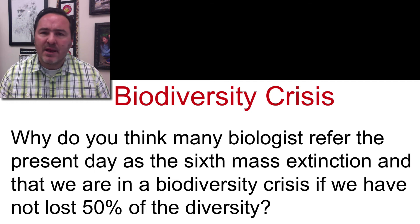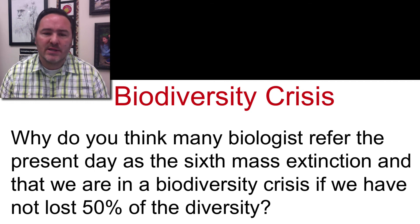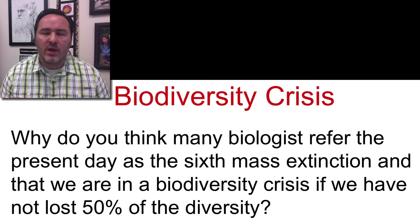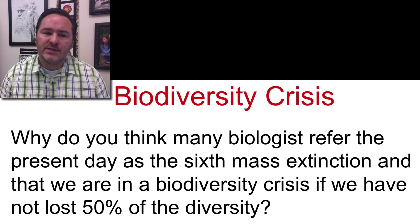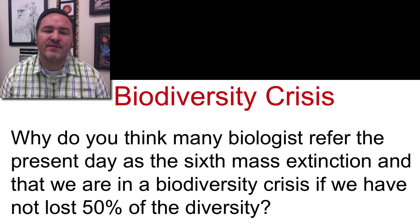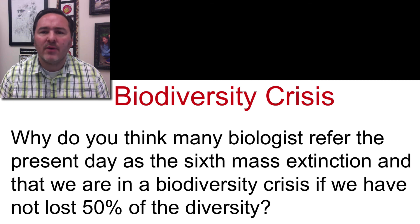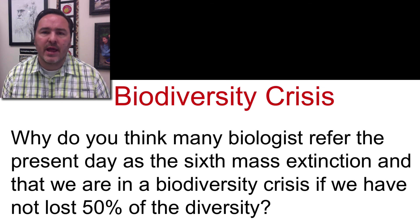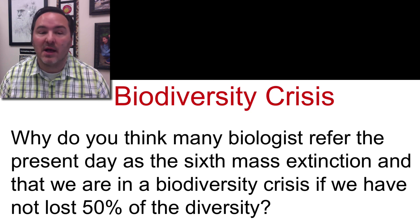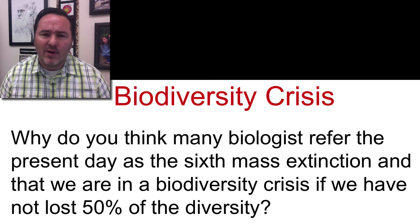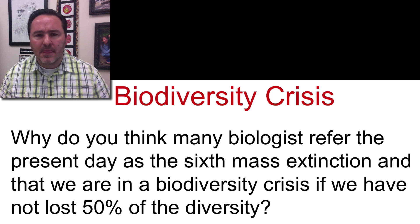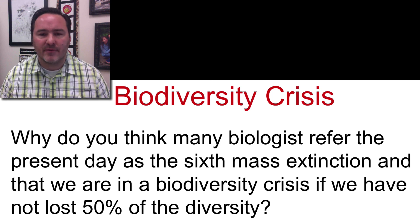Today, many biologists and ecologists refer to the present day as a sixth mass extinction event, and that we need to be really worried about current biodiversity. Based on what I just said — that a mass extinction is defined as having lost 50% of total biodiversity — why would biologists say we're in a current biodiversity crisis and in this sixth mass extinction when we have not lost 50% of diversity? Think about that. We're going to watch a video and hopefully a few ideas will come out from this.